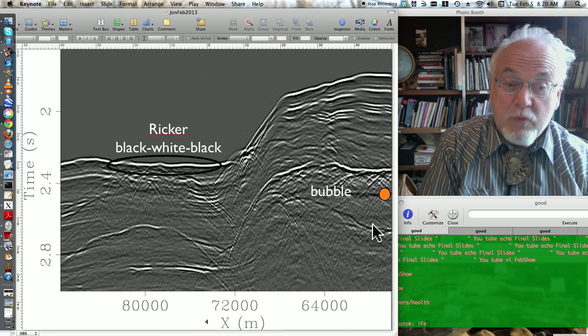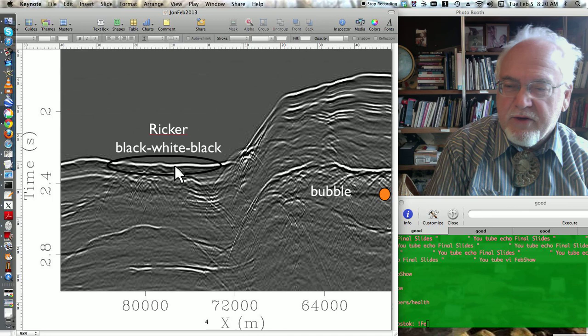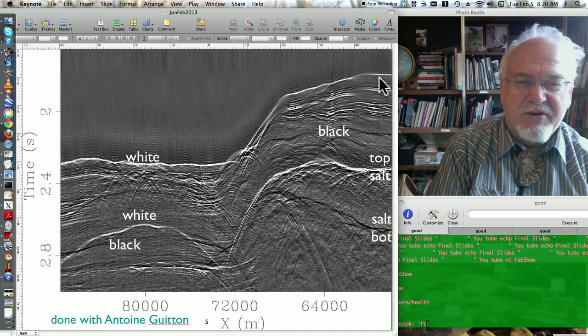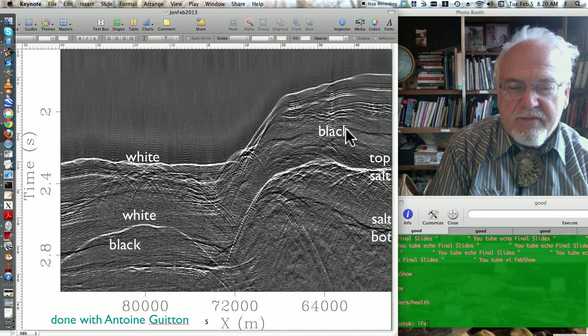And what's happening when we process this is we're going to turn this Ricker wavelet into a spike. And so here it is, it's become a white spike. And now when you look at this data, it's much more apparent, especially to a geophysicist. Interpreters could figure this out easily all along, but they'll see the top of the salt has the same polarity as the water bottom.